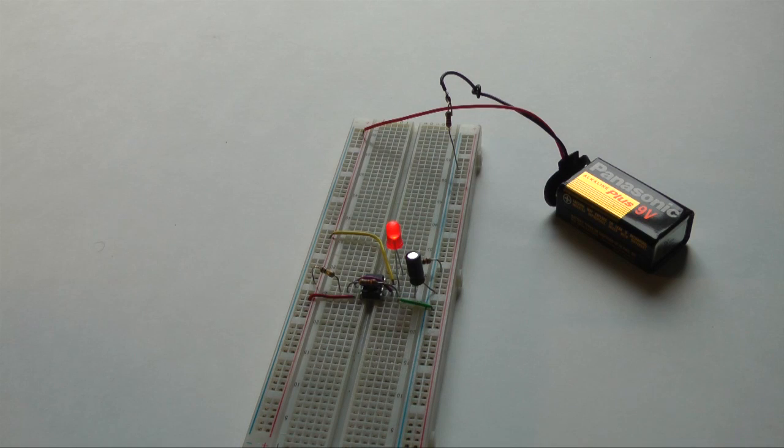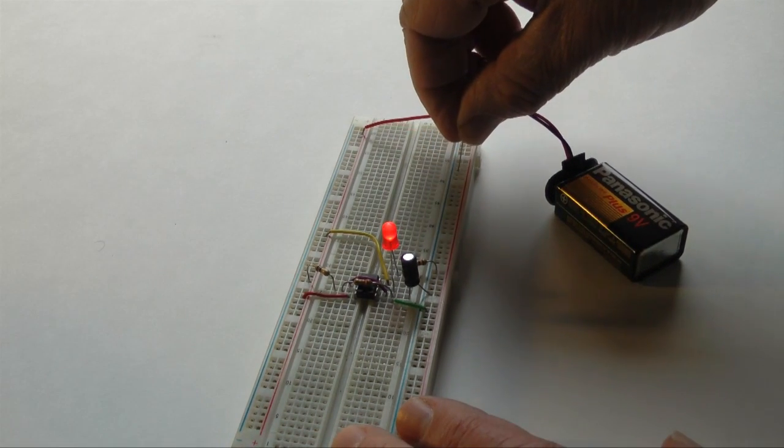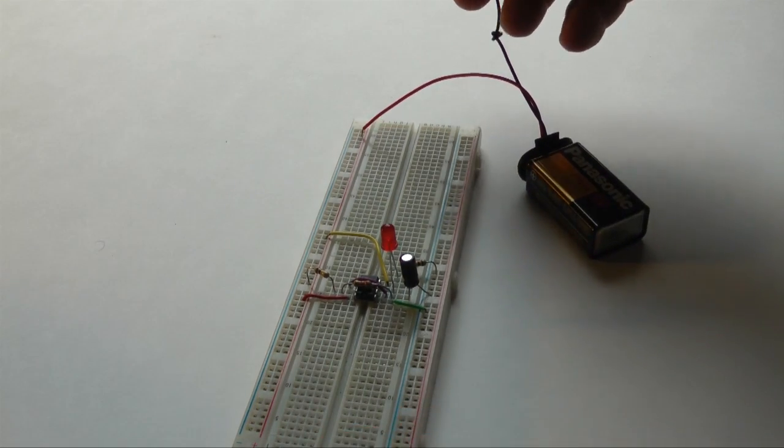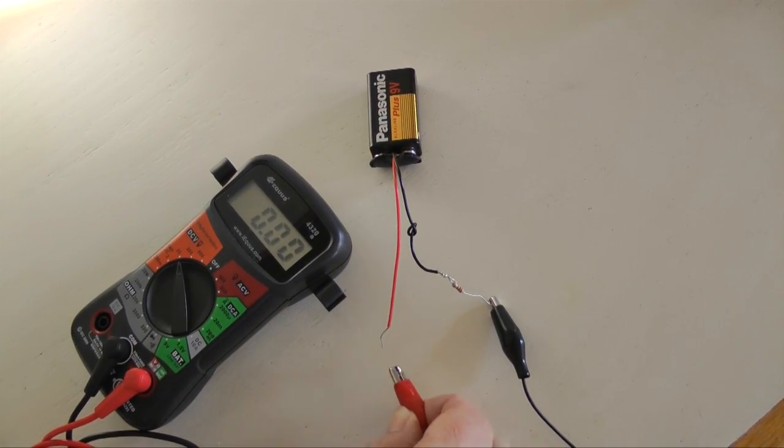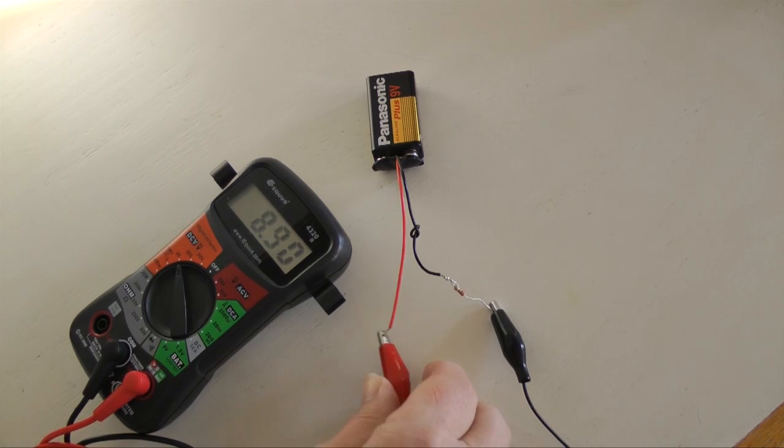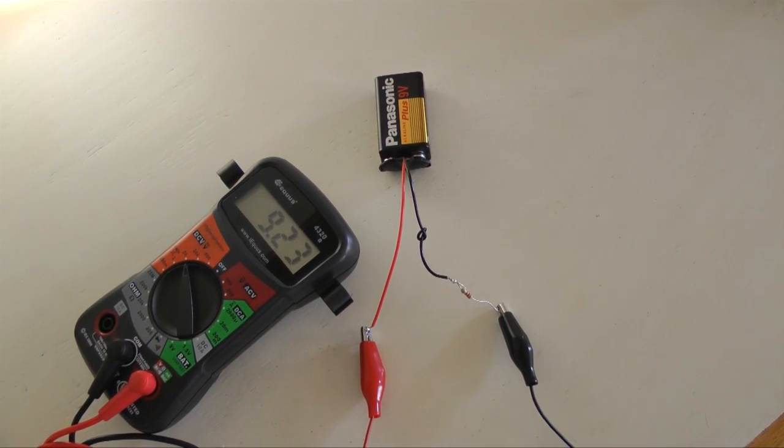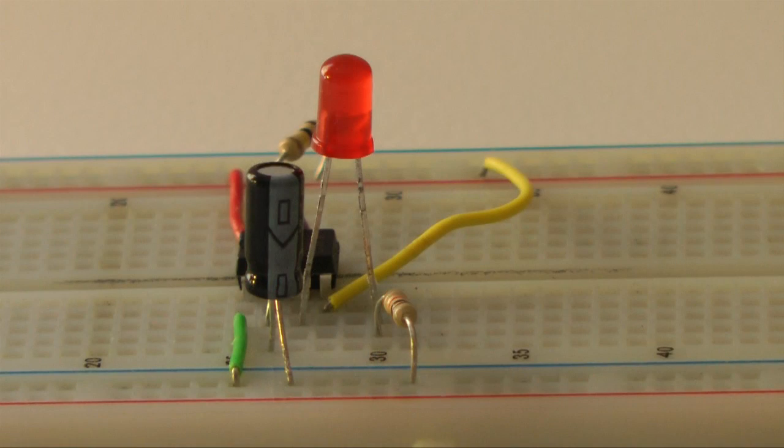The LED should start blinking. If it doesn't, disconnect your battery and start troubleshooting. Confirm with a meter that your battery is OK. Then check the LED. Is it oriented correctly with the positive terminal connected to pin 3?